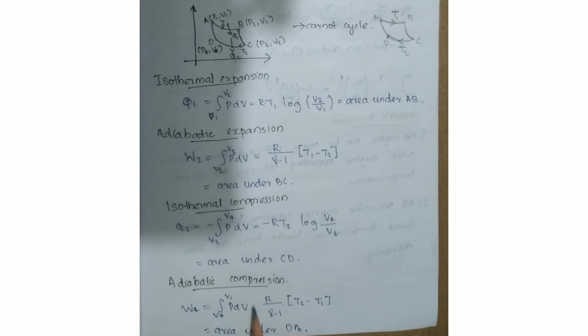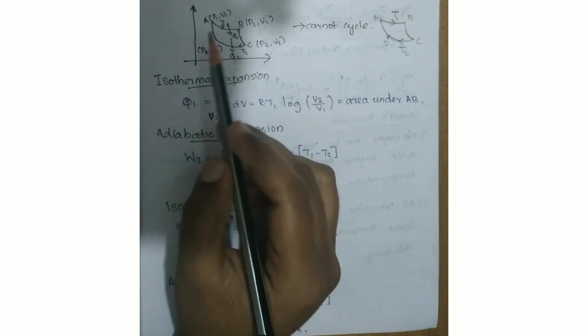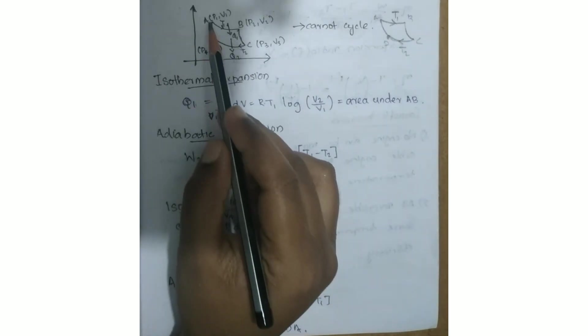Adiabatic compression is given by integral of V4 to V1 of P dV, which equals R divided by (gamma minus 1) multiplied by (T2 minus T1). That is the area under curve DA.